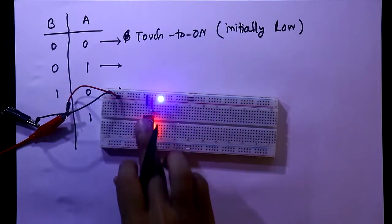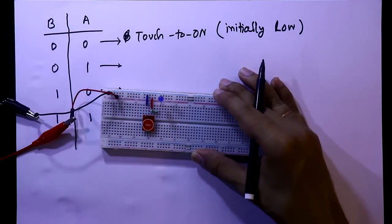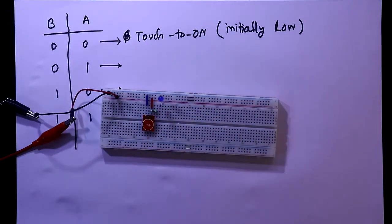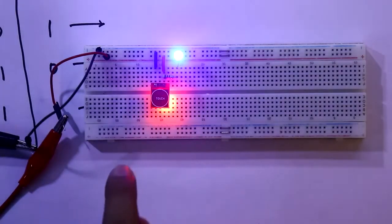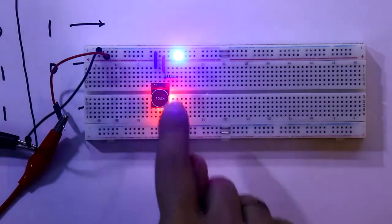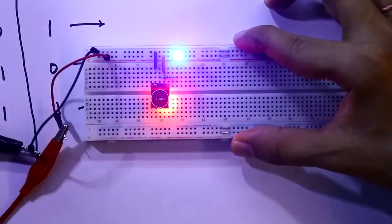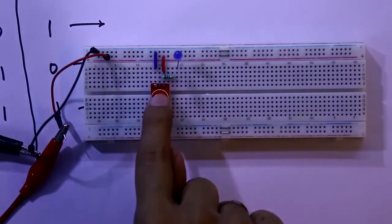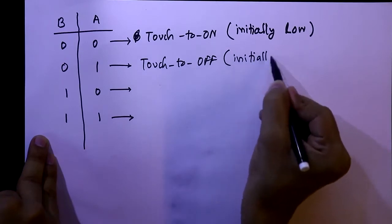Initially low means if I connect the power supply, here I have removed it and again I am connecting it, it is low. That's why I have written here initially low. I have soldered and this time it is only A. It is high, it is working as touch-to-off. And its initial condition is initially high. It is touch-to-off. For only A it is touch-to-off and it is initially high.